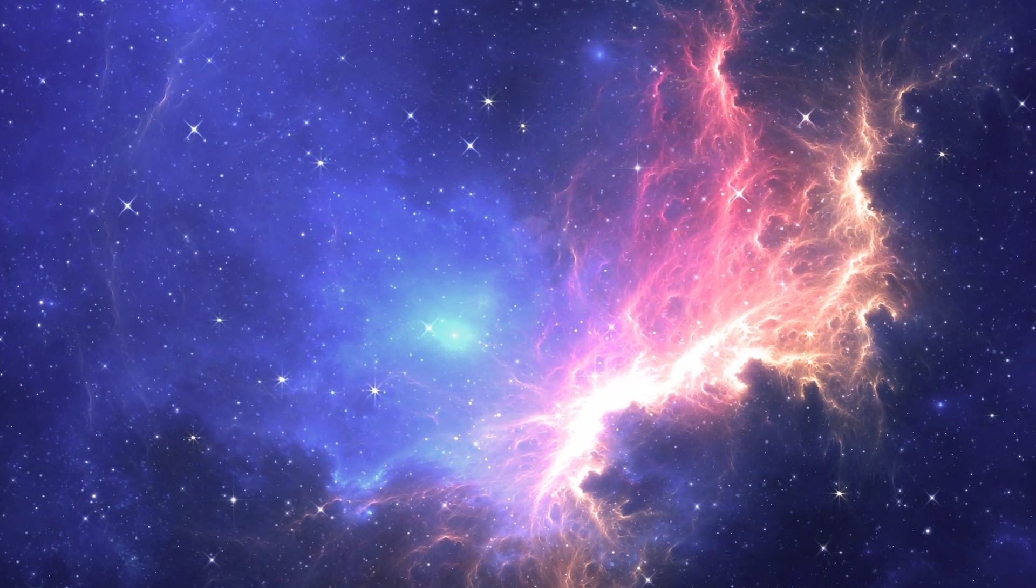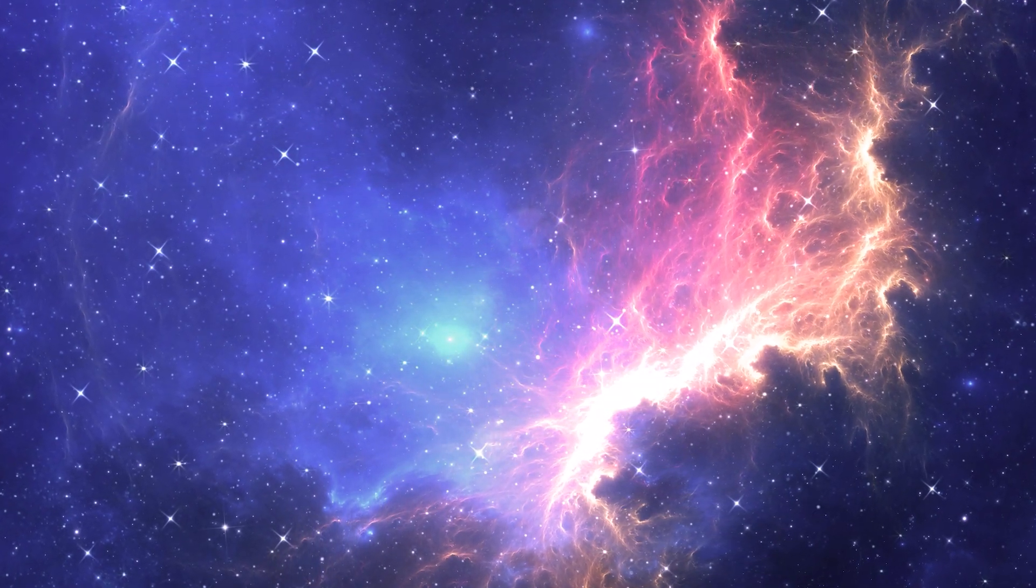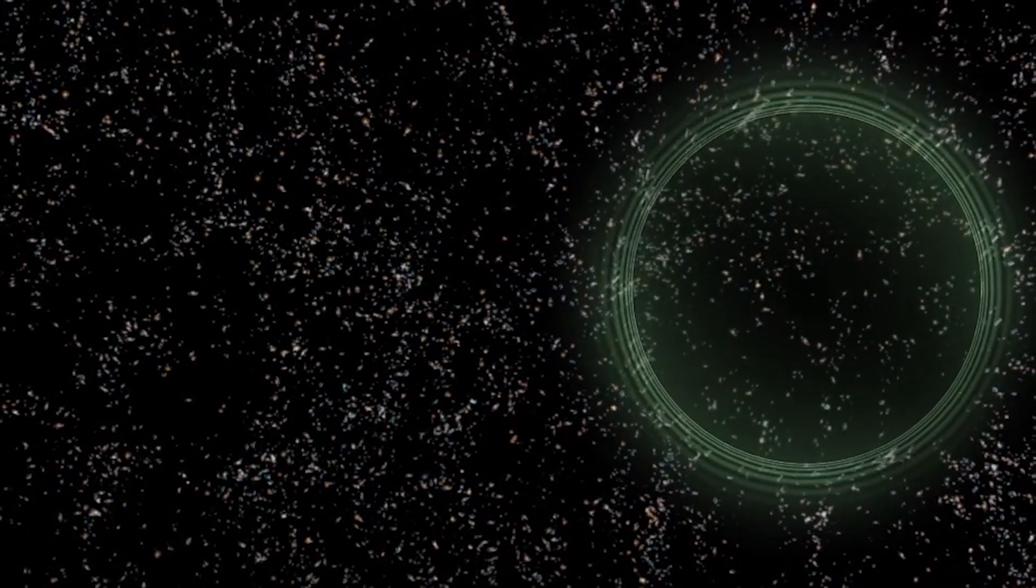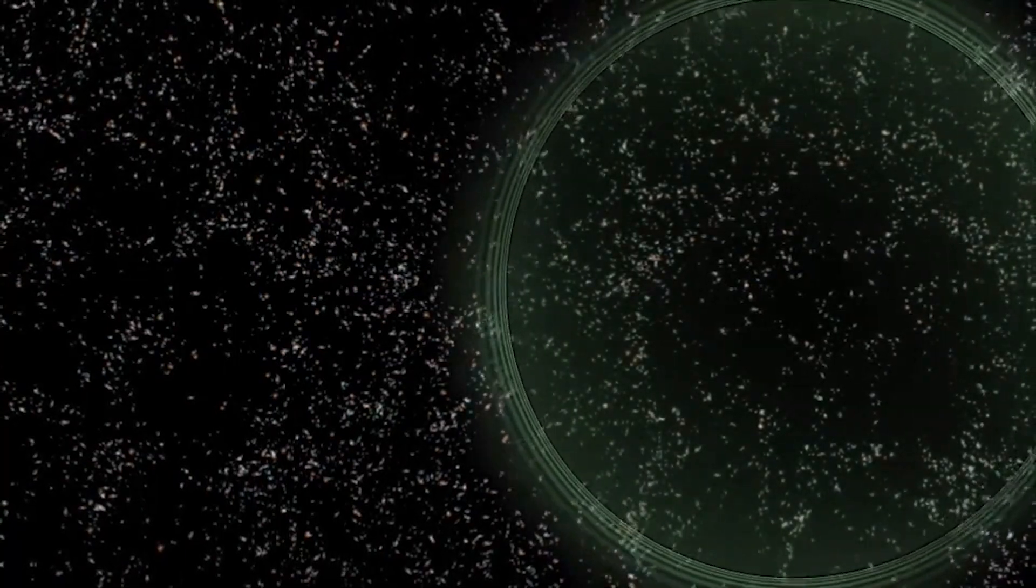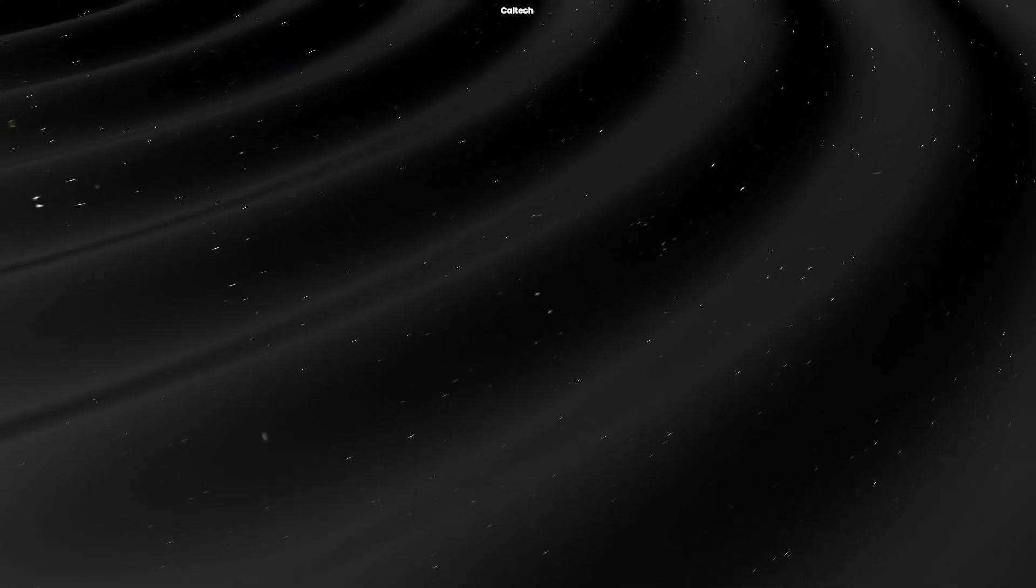Before this discovery, everything we knew about the universe came from studying light waves. The discovery of gravitational waves gave us a new perspective. When massive objects orbit around each other, they disrupt spacetime so that waves of rippled spacetime propagate in all directions away from the source. What's fascinating is that these waves travel at the speed of light, carrying information about their origin and the nature of gravity itself.